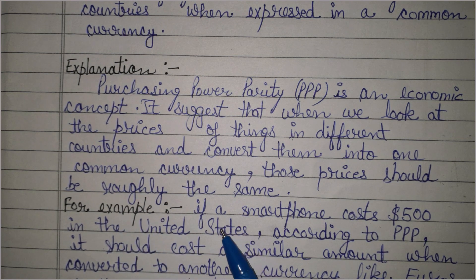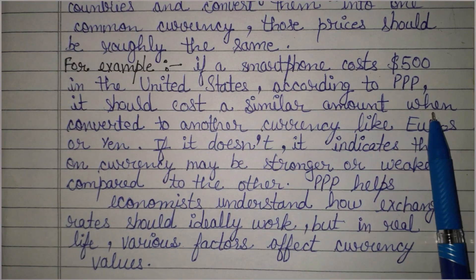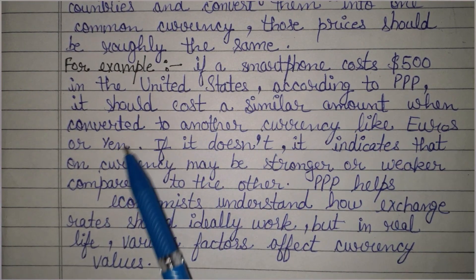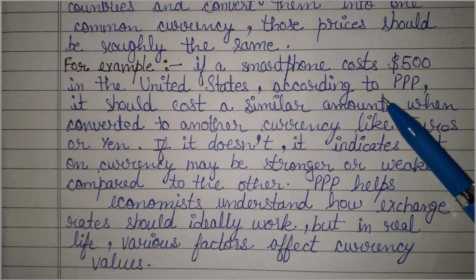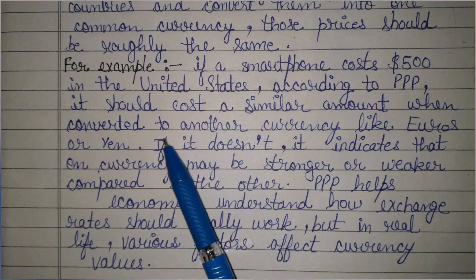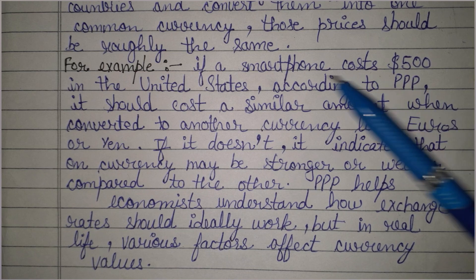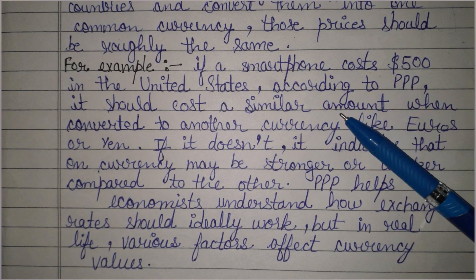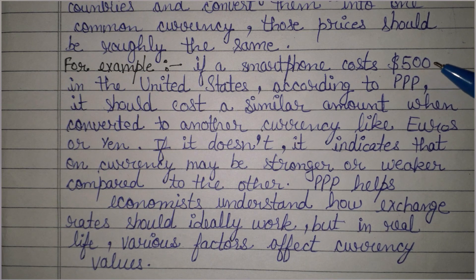For example, if a smartphone costs $500 in the United States, according to PPP it should cost a similar amount when converted to another currency like euros or yen. मान लीजिए United States में एक smartphone की कीमत $500 है और जब हम उसे India के according convert करें तो India में वो smartphone around ₹41,000 का मिलेगा — जो $500 में United States में मिल रहा है।